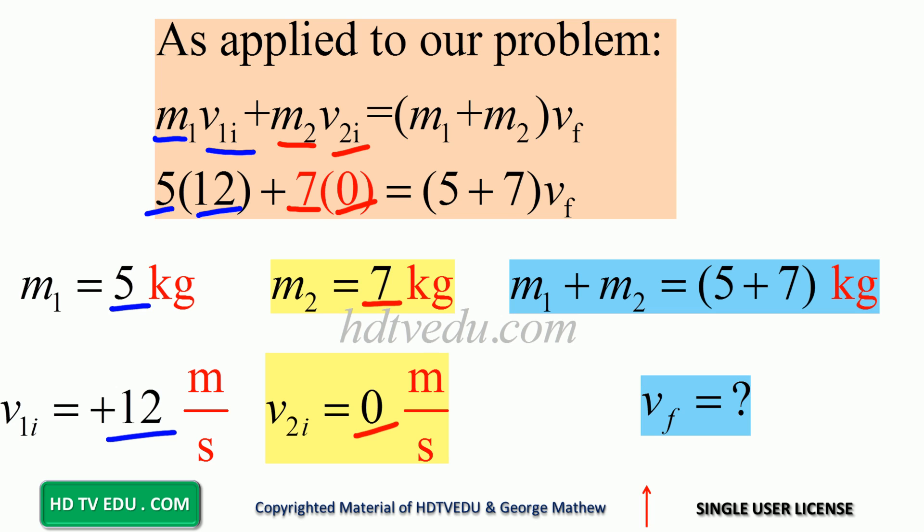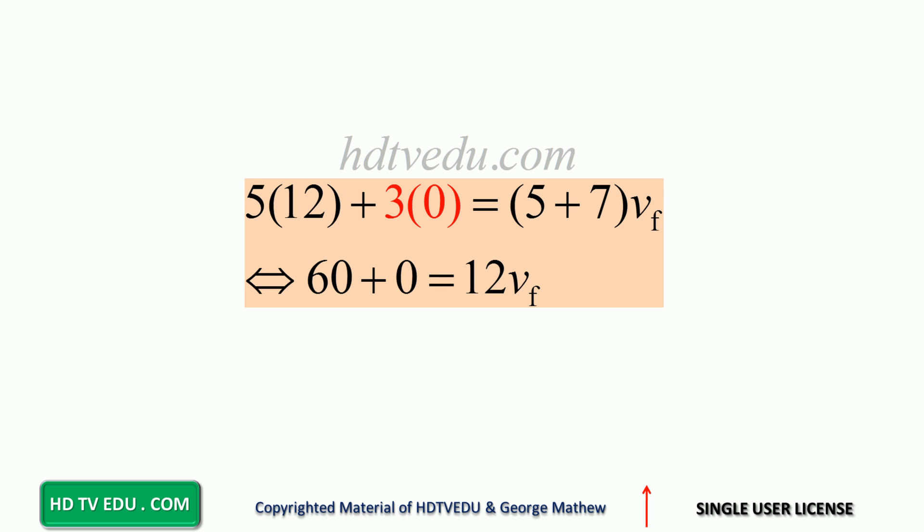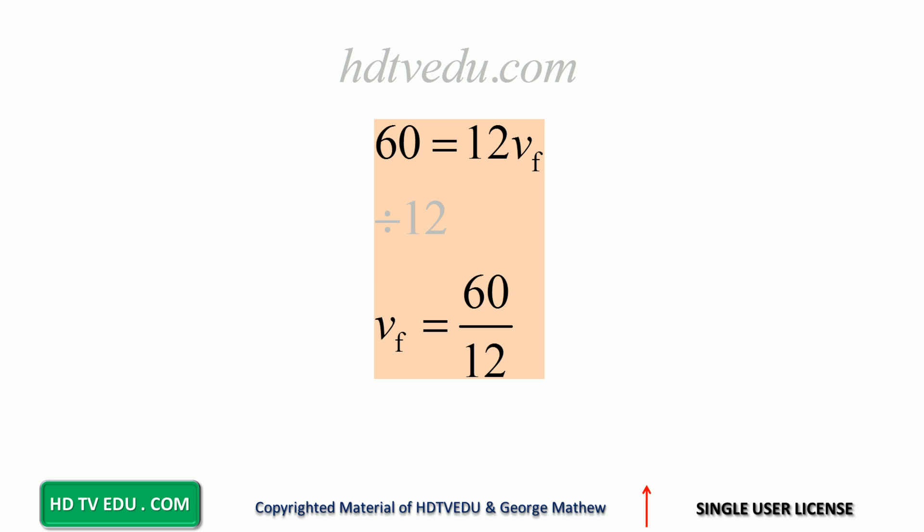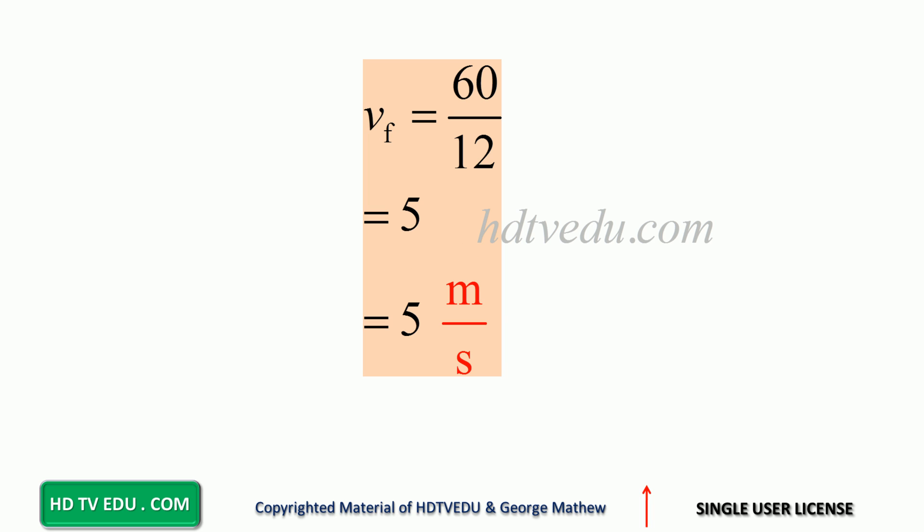What is the combined mass? 5 plus 7. What is v final? You multiply: 5 times 12 is 60. 7 times 0 is 0. 5 plus 7 is 12. So 60 plus 0 equals 12·vf. 60 equals 12·vf. Divide both sides by 12 and what do we get? vf is equal to 5, so 5 meters per second.